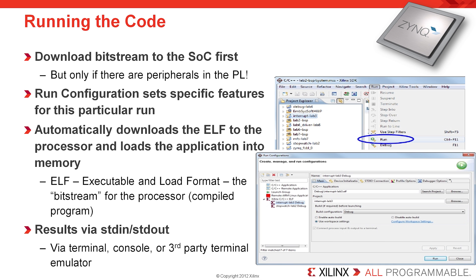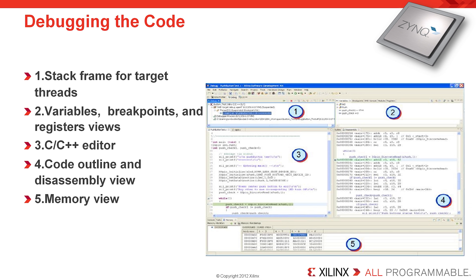Running the code is very straightforward — one would simply right-click the application and begin running. The bitstream does need to be downloaded to the SoC first, but only if there are peripherals that the processor will be talking to that reside in the programmable logic. Otherwise, no download is required. Inevitably, there's always a problem with a small piece of code, so there is what is known as a debug perspective, which brings up all of the appropriate windows most useful for diagnosing and finding errors within SDK.